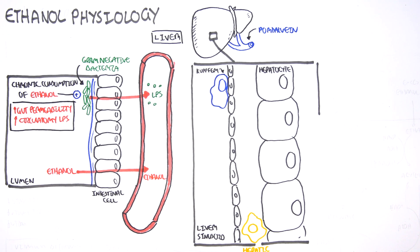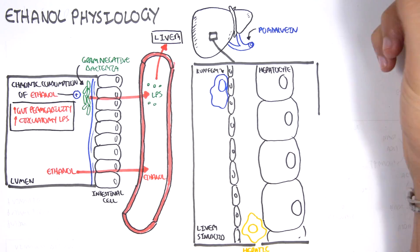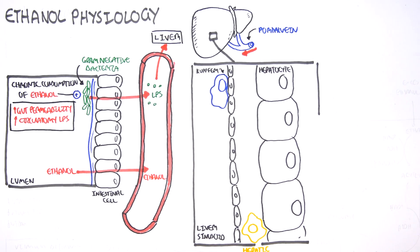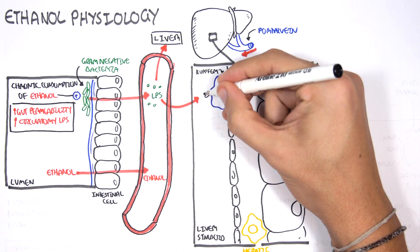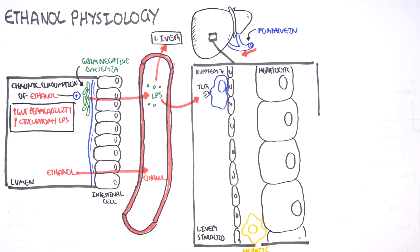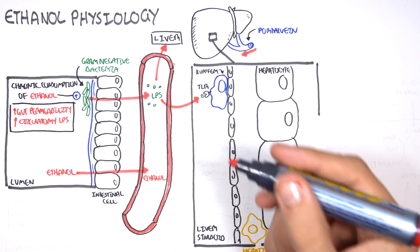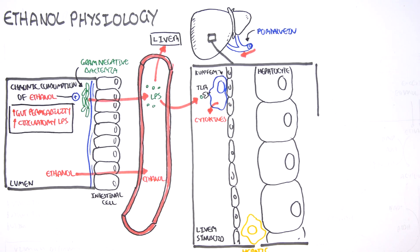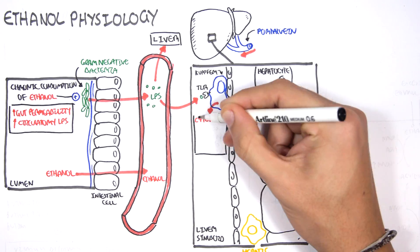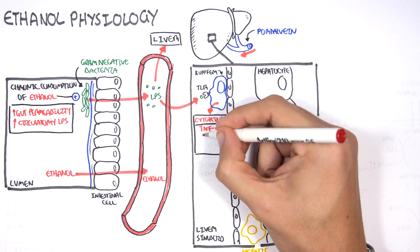Let us now look at the effects lipopolysaccharide, LPS, has on our body. LPS travels to the liver, where it is recognized by Kupfer cells through toll-like receptors, which are immune cell receptors. When Kupfer cells recognize the lipopolysaccharides, they begin secreting cytokines such as TNF-alpha, interleukin-1, interleukin-6, and interleukin-12.